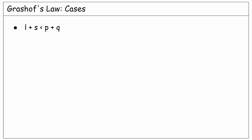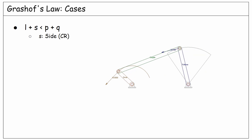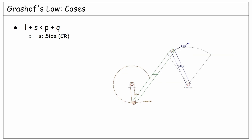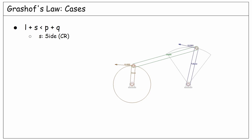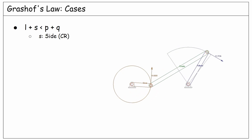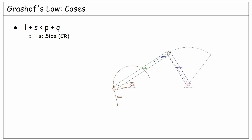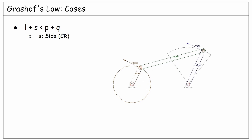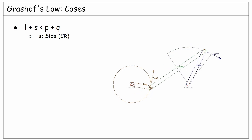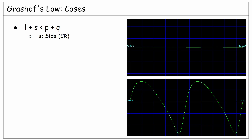Let's start with the case where L plus S is less than P plus Q. In this case, we need to look at the shortest link. If the shortest link is a side link, such as the driver or the follower, we will have a crank-rocker motion, as you see in this working mechanism. The driver rotates a full 360 degrees, and the follower oscillates in a range of angle. This range has two endpoints where the driver and the coupler are aligned. The crank rotates at constant speed, but the follower's speed varies from zero at the endpoints to a maximum somewhere within the follower range, as shown in the comparison plot.